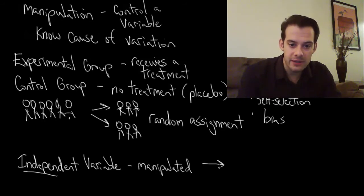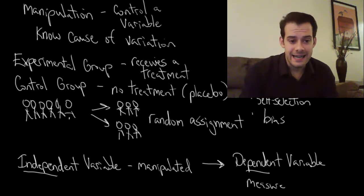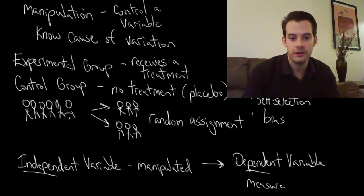After we manipulate the independent variable, we're going to look at a dependent variable. The dependent variable refers to what we measure after the treatment. What we want to find out is: does this independent variable have an influence on the scores on the dependent variable? Does this variable depend on how much somebody studied, or does this depend on whether they took the medicine or the placebo pill? That's why this is called the dependent variable. We want to find out if it depends on the independent variable.